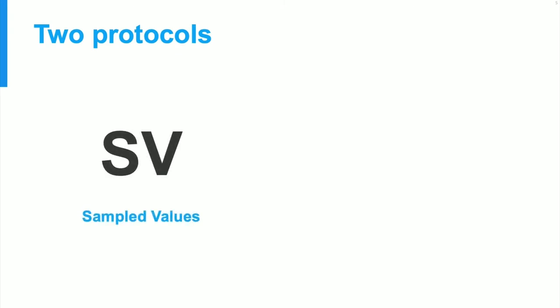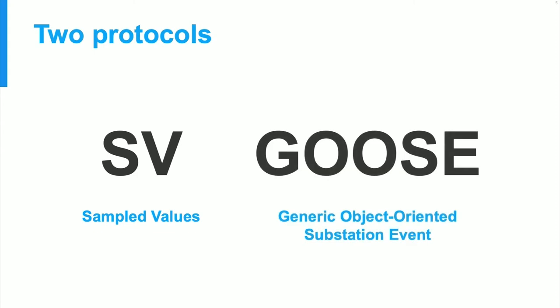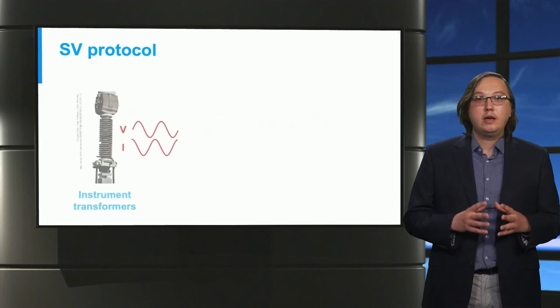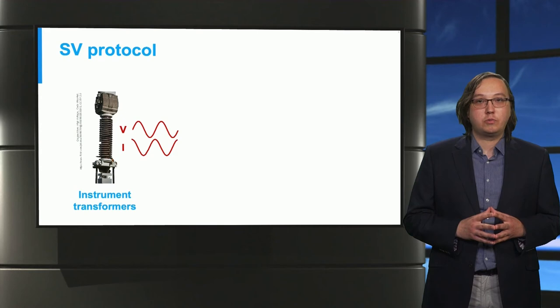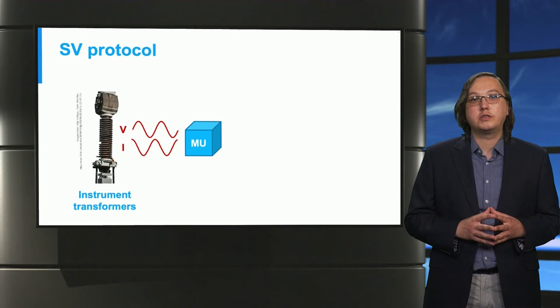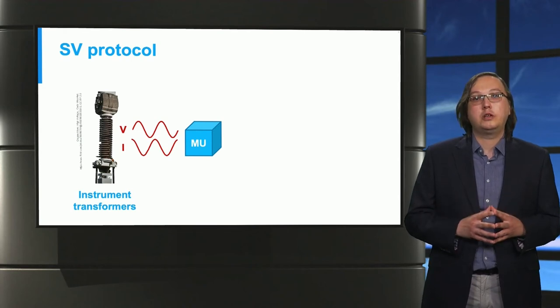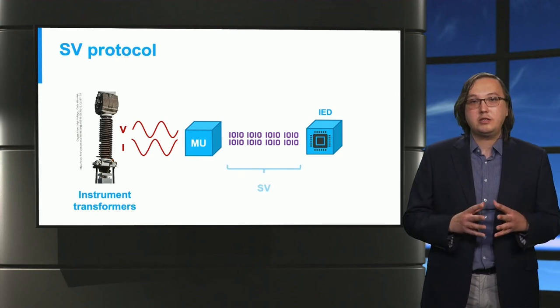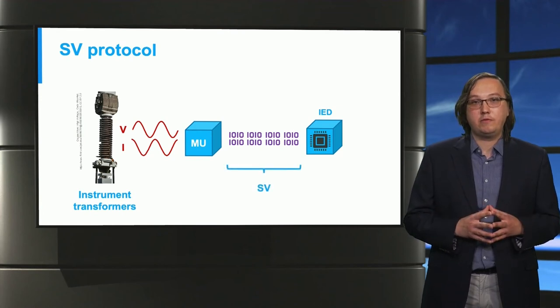The IEC 61850 standard has two main protocols, sample values and the generic object oriented substation events or GOOSE for short. Let's have a closer look at them starting with the sample values protocol. In the substation we have instrument transformers such as current and voltage transformers that facilitate accurate measurements. Note that the signals coming out are analog. A merging unit samples those waveforms and converts them into a digital data stream for the various intelligent electronic devices. And this data stream is realized using the sample value protocol.